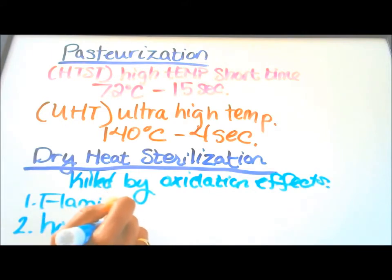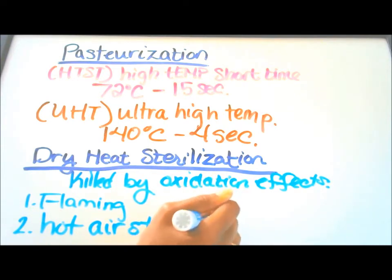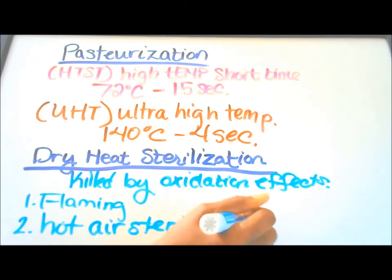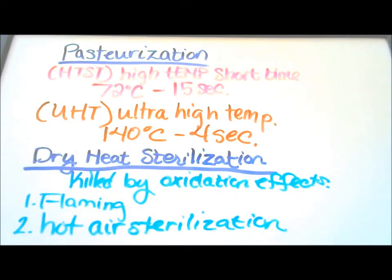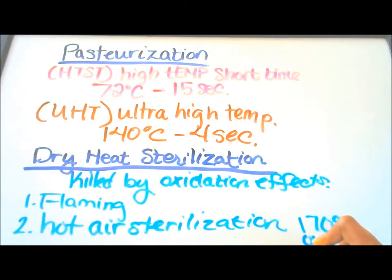Hot air sterilization is another example of dry heat sterilization, and it uses a temperature of 170 degrees Celsius in an oven for two hours.